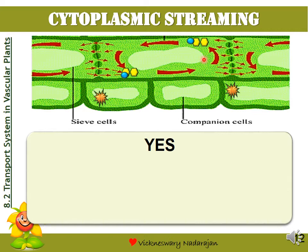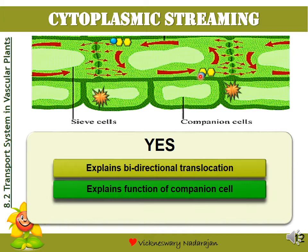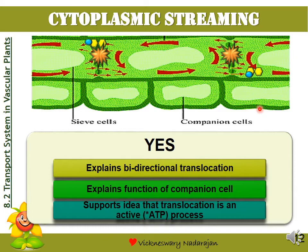The reasons why cytoplasmic streaming is accepted as a hypothesis for translocation are: firstly, it is able to explain bidirectional translocation — as the molecules circulate, they can circulate upwards in one area and downwards in the other area of the sieve tube. Secondly, it explains the function of the companion cell, that is, to generate ATP. And of course, it helps to support the idea that translocation is an active process.